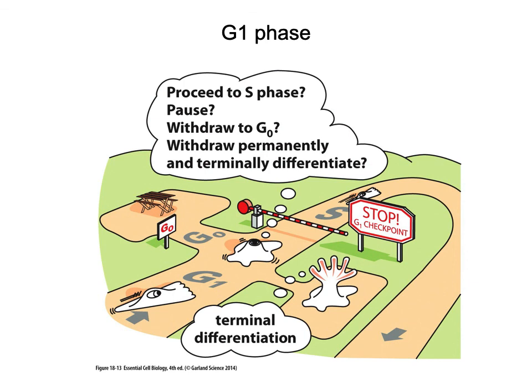Next we're going to look at each of these phases a little more closely. Keep in mind that the goal is for cell division to happen, but with checkpoints along the way — before we can proceed to the next step, that checkpoint has to be met.